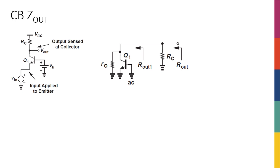Now that we've covered input resistance or input impedance, we have to talk about output impedance. The output of the common base is actually sensed from the collector side of the transistor. Therefore, it's pretty much similar, in terms of impedance at least, to common emitter, because over there we had the output connected to the collector. So I expect an R_out that is very similar to what I had in the common emitter.